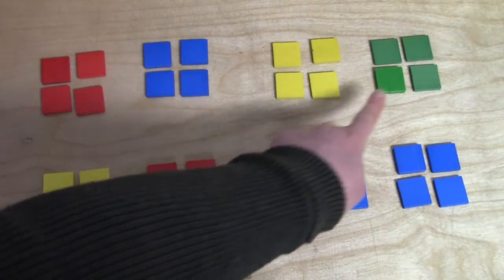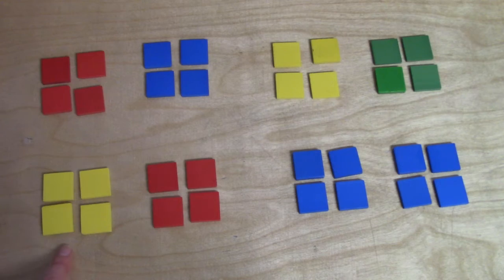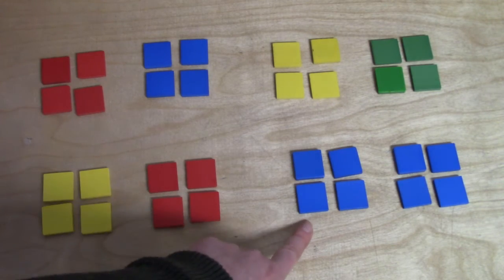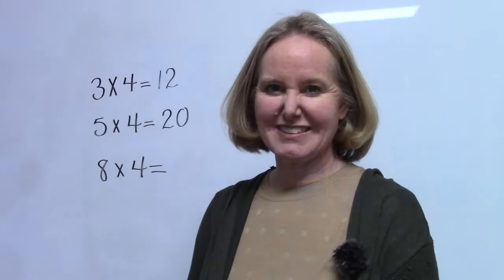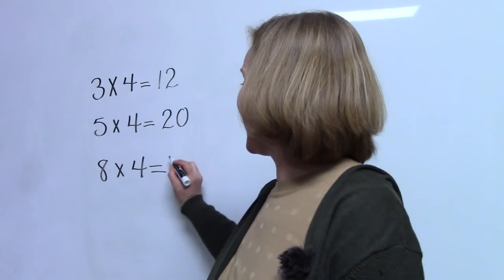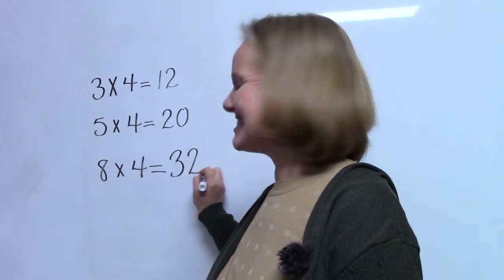Four, eight, twelve, sixteen, twenty, twenty-four, twenty-eight, thirty-two. Eight groups of four is thirty-two.